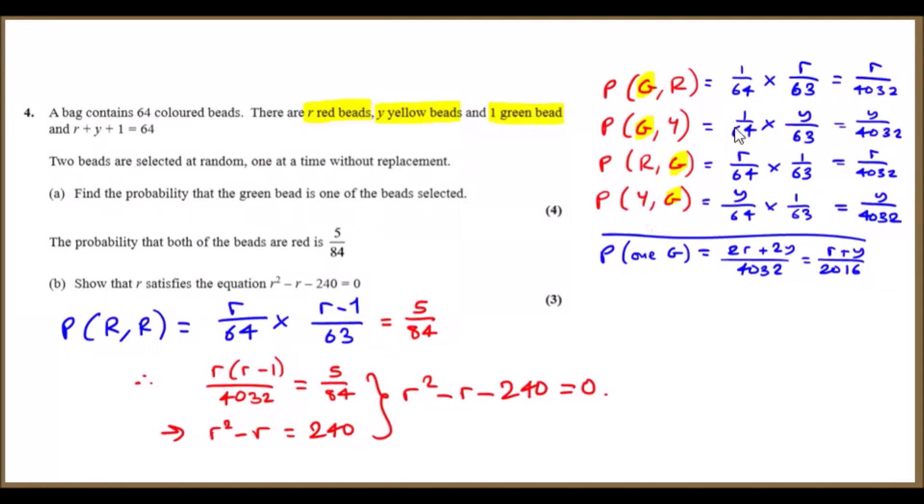Now to answer this question properly, it's always the total. You just have to work these out, multiply them—r times 1, y times 1—and then just sum all these up. When you sum these up, you should get 2r plus 2y out of 4032, and you can simplify this to r plus y out of 2016. Easy.